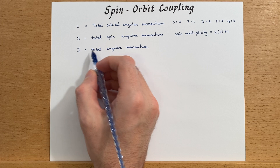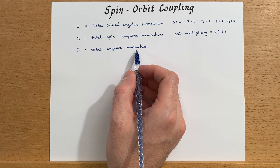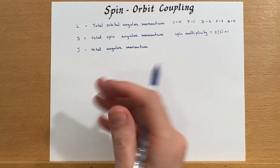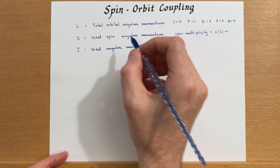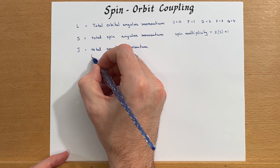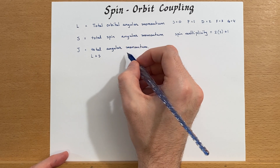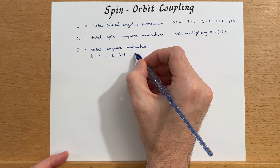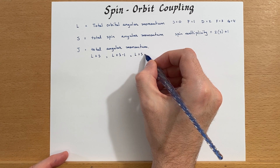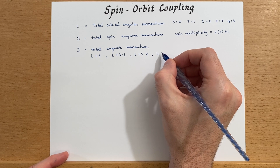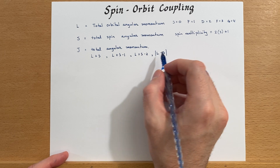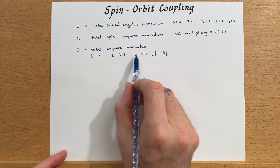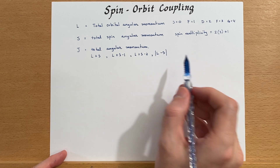Next we have J, which is the total angular momentum — really what we're determining here. J is the spin and orbit coupling combined into the total angular momentum quantum number. You can determine J by adding L to S, and then subtracting one from that number, potentially two, and so on, until you get down to the absolute value of L minus S.